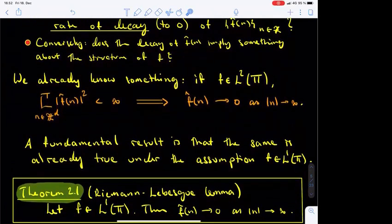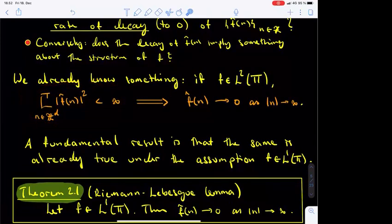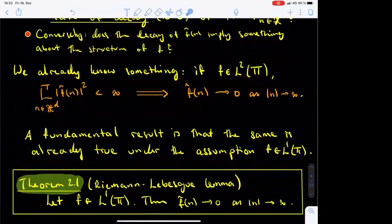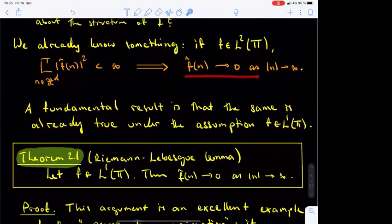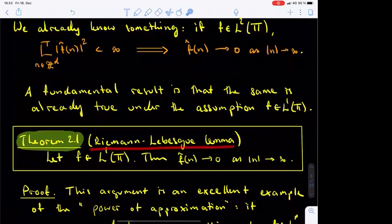It turns out that we have already seen one basic result on the decay of Fourier coefficients, namely the Plancherel identity, which implies that if f is a function in L2 of T, then its Fourier coefficients are L2-summable. In particular, this forces the Fourier coefficients of L2 functions to tend to zero at infinity. Now, what if f is in L1 of T instead of L2 of T? Do the Fourier coefficients of L1 functions tend to zero at infinity? Yes, they do, and this is known as the Riemann–Lebesgue lemma. Let f be a function in L1 of T; then the Fourier coefficients of f tend to zero as n tends to infinity.